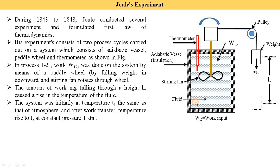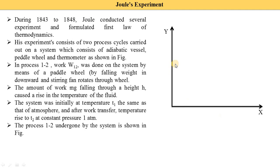Process 1 to 2 undergone by the system is shown on this figure. We draw a graph on X and Y axes — the unknown parameter, generally taken as T-S. State 1 is the initial condition where temperature is atmospheric. When the wheel is rotated, temperature increases and some parameter changes. This is state 2. At this time we supply some work done, so W₁₂ supplied is written here.